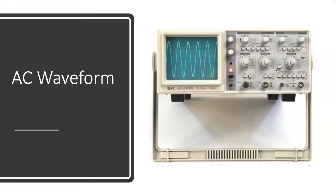This is an AC waveform. If you notice, it's oscillating. We know that in the United States it oscillates at 60 hertz, which is 60 times per second. Right now, you need to understand that if you are in the United States and you have 120 volts in your wall outlet, this is what your voltage would look like oscillating at 60 hertz. The AC waveform constantly goes from a positive peak to a negative peak, again, 60 times a second.